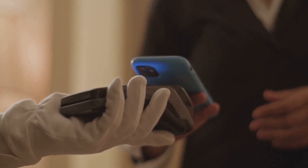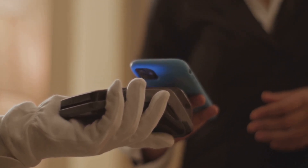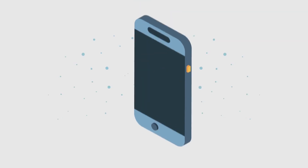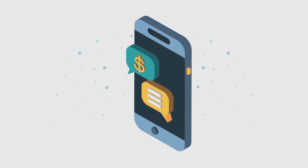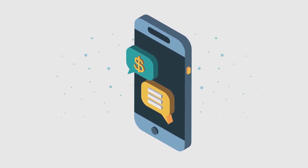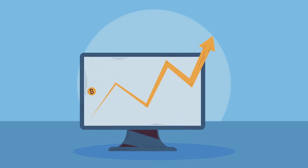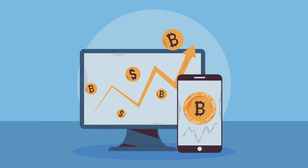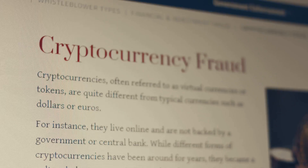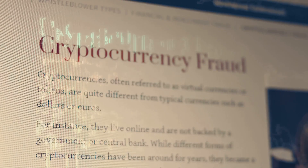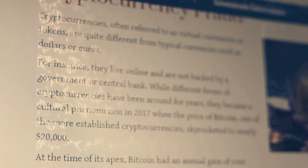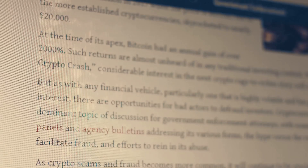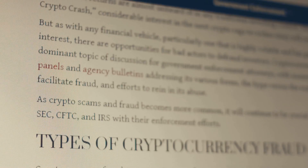Remittances are another key area, allowing migrant workers to send money back home quickly and affordably. Stablecoins can enhance financial inclusion by providing access to digital financial services. Online merchants can benefit by accepting stablecoins and reducing transaction costs. The regulatory landscape is still evolving, but the potential for stablecoins to integrate into daily economic activities is substantial.